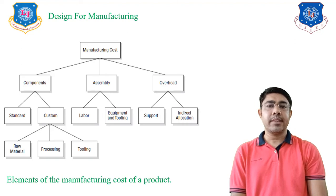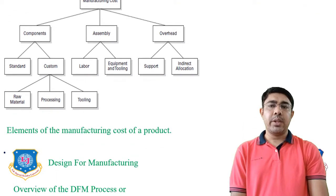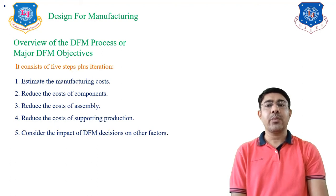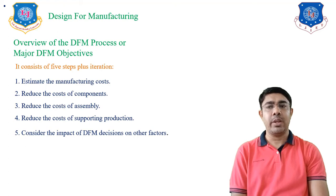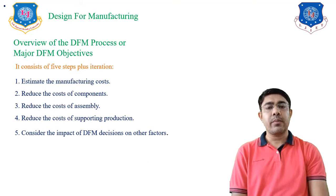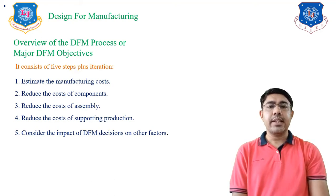Design for Manufacturing focuses on reducing manufacturing cost, which is helpful in the DFM process. There are five steps or objectives of Design for Manufacturing. First: Estimate the Manufacturing Cost. Second: Reduce the Cost of Components. Third: Reduce the Cost of Assembly. Fourth: Reduce the Cost of Supporting Production. Fifth: Consider the Impact of Design for Manufacturing Decisions on Other Factors.